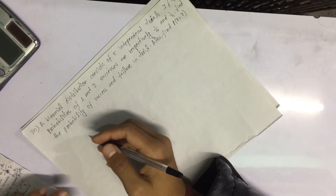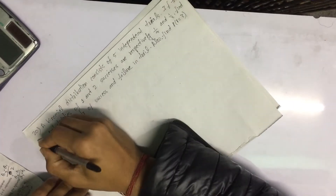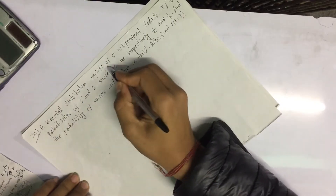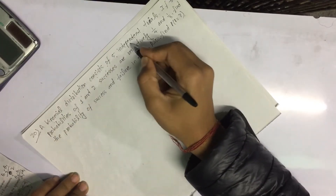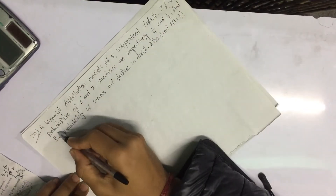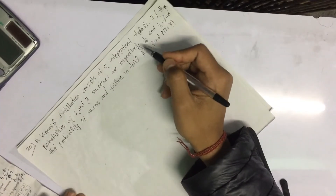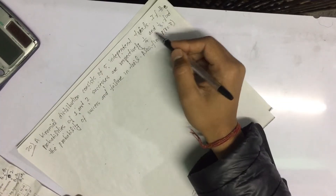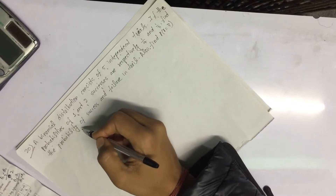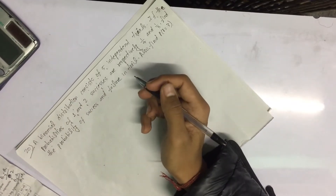Hello. A binomial distribution consists of 5 independent trials. If the probability of 1 and 2 successes are respectively 1 by 4 and 1 by 3, find the probability of success and failure.